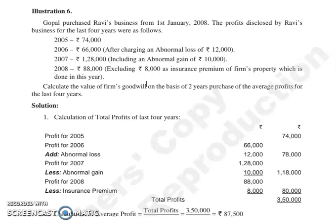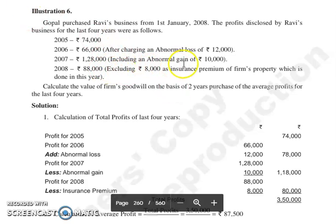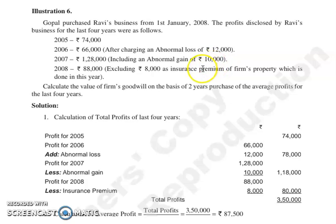2006 profit was 66,000, after charging an abnormal loss of 12,000. Then 2007 profit was 1,28,000, including an abnormal gain of 10,000 rupees. 2008 profit was 88,000, excluding 8,000 rupees as insurance premium of the firm's property which was paid this year. Calculate the value of goodwill on the basis of 2 years purchase of the average profit for the last 4 years.